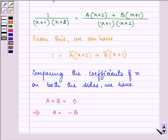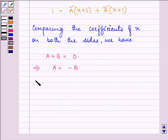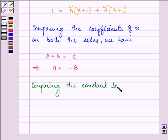And comparing the constant terms on both sides, we have 2A plus B equal to 1.